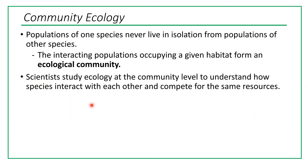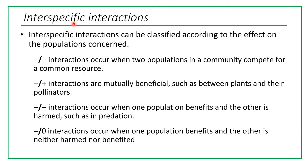When looking at interspecific interactions, we can classify them according to the effect on the population, and we can use minus and plus signs to represent those interactions. Minus-minus interactions occur when two populations in a community compete for a common resource — both populations are at a disadvantage. They compete for the same resource and are both harmed. This competition is actually very good for evolution, though for individual populations it might not be great.